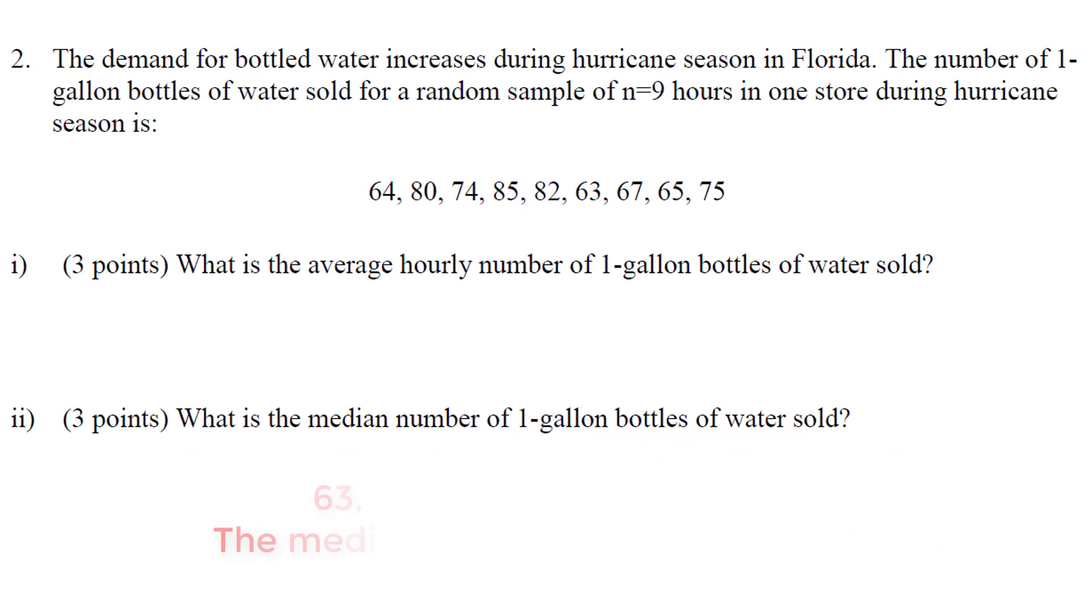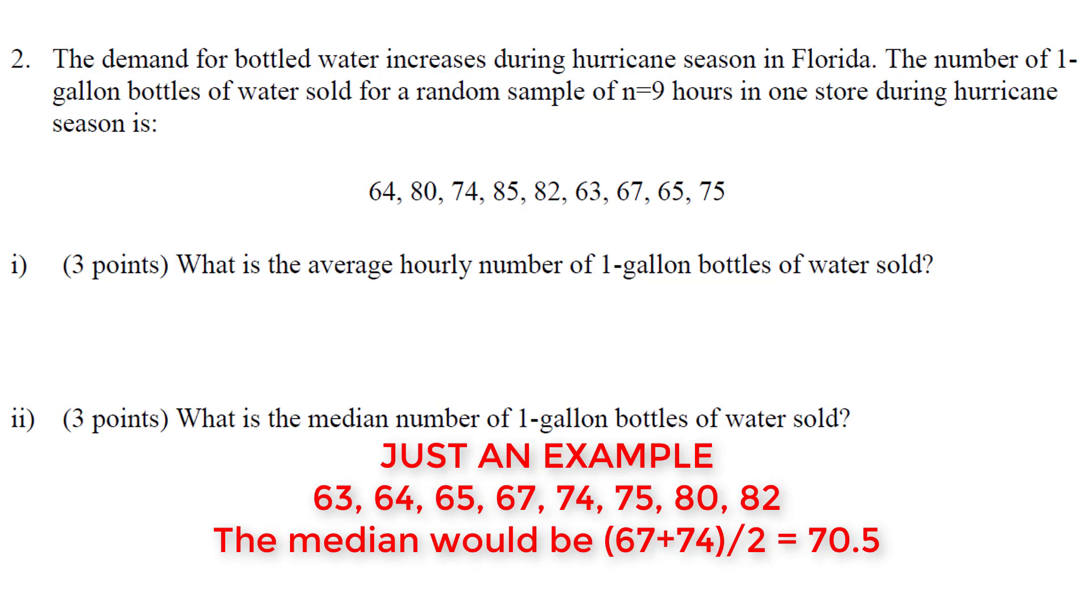If we had had eight numbers, there would be no middle number, which means we would average together the fourth and the fifth number. So watch out for problems that give you an even amount of numbers, where there is no exact middle number, and you have to average together two numbers.